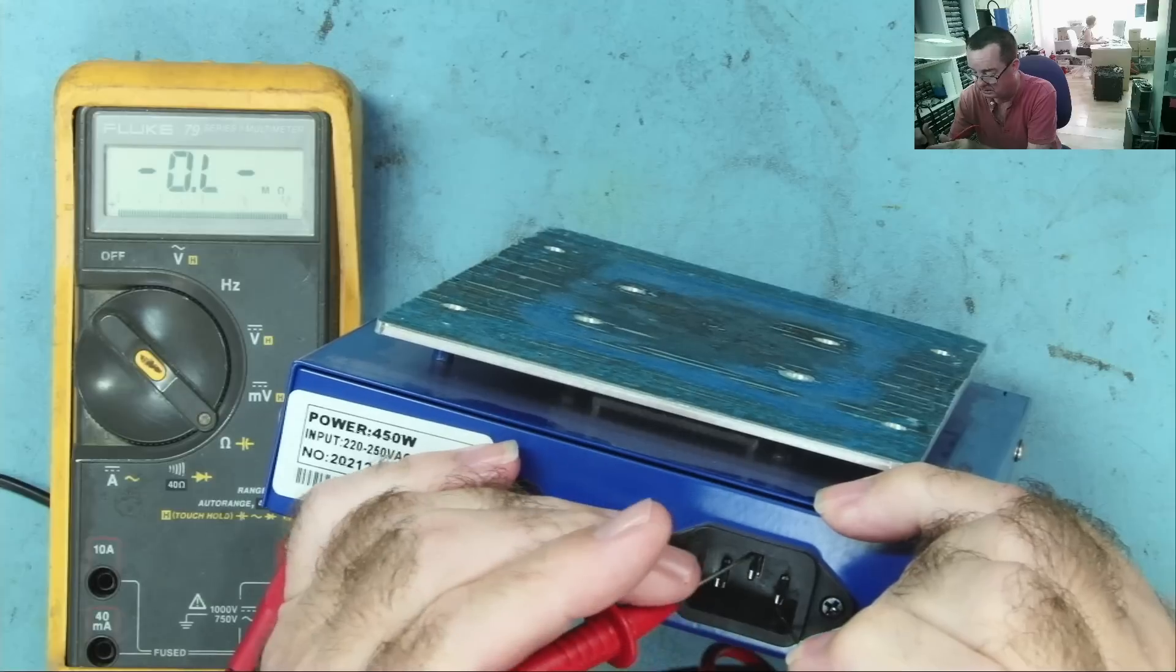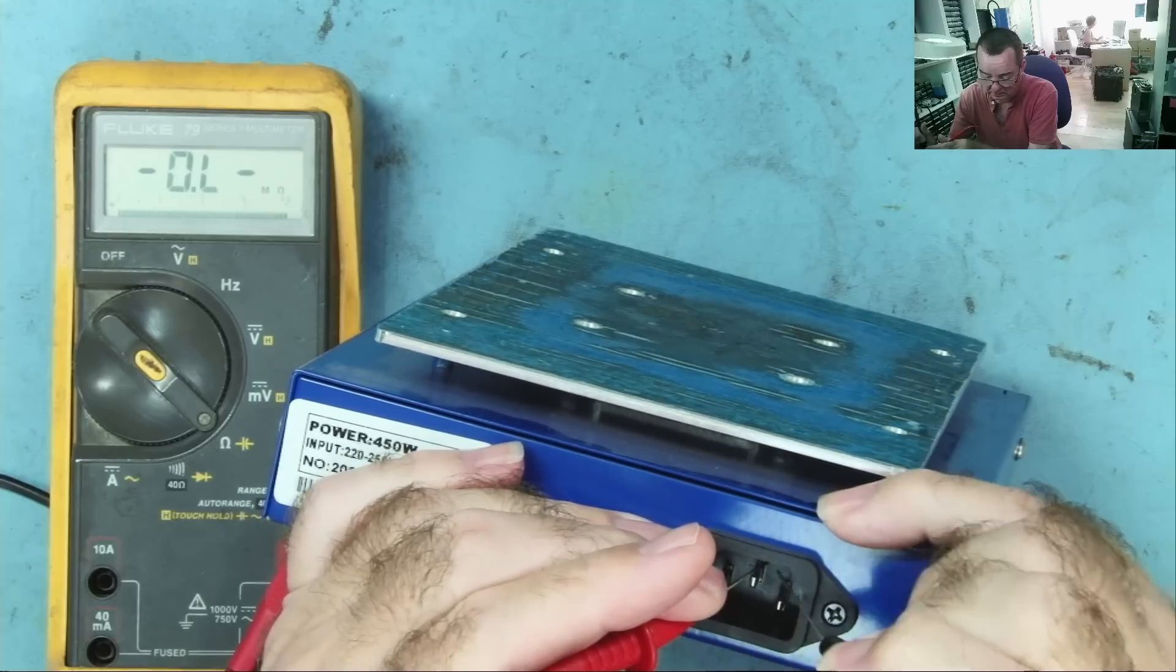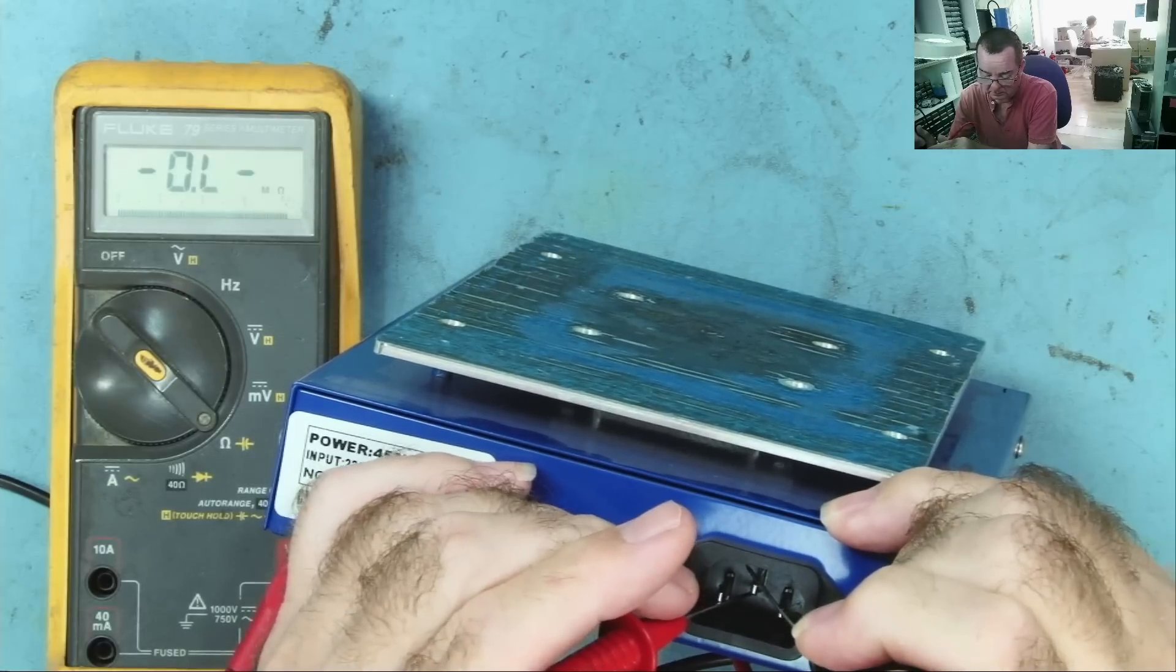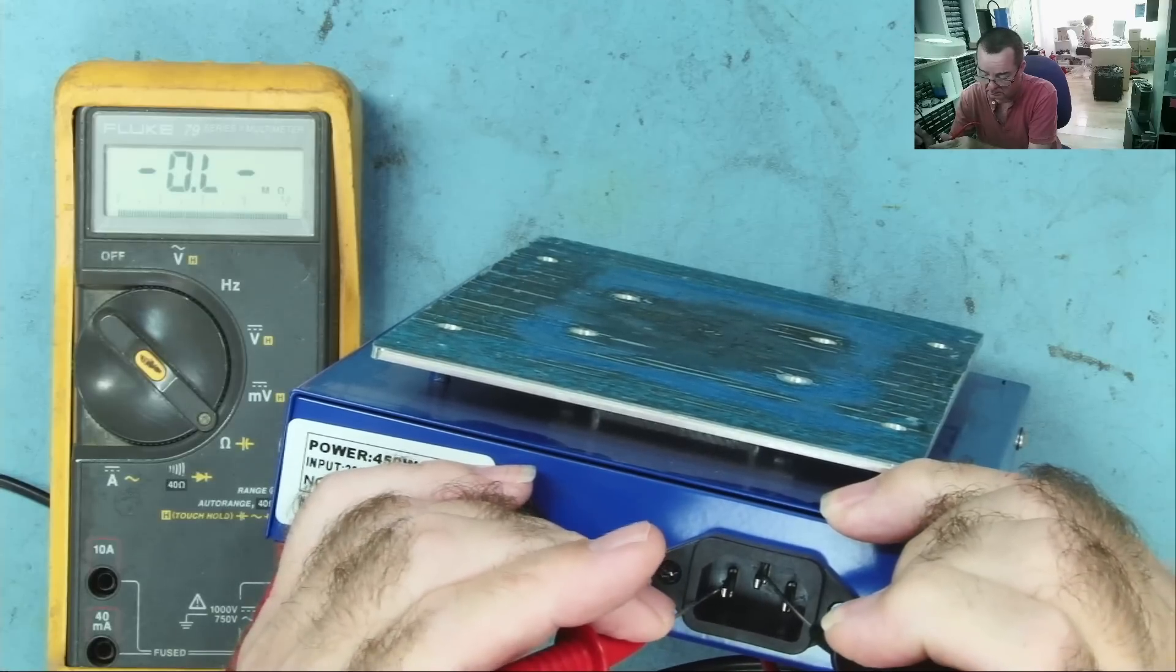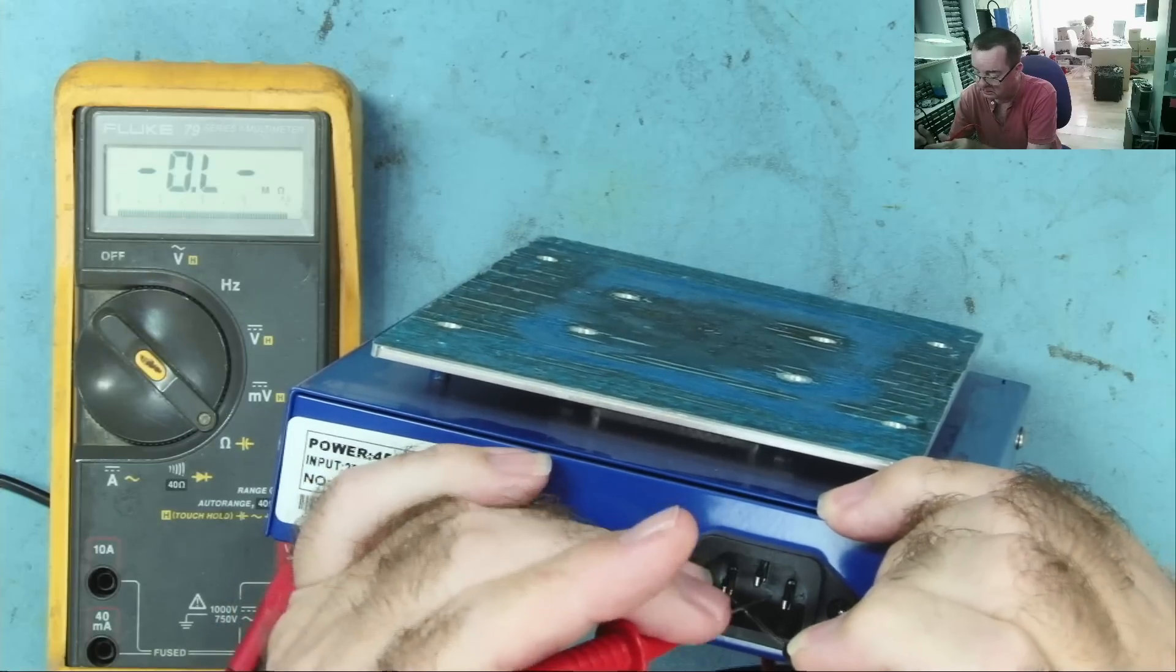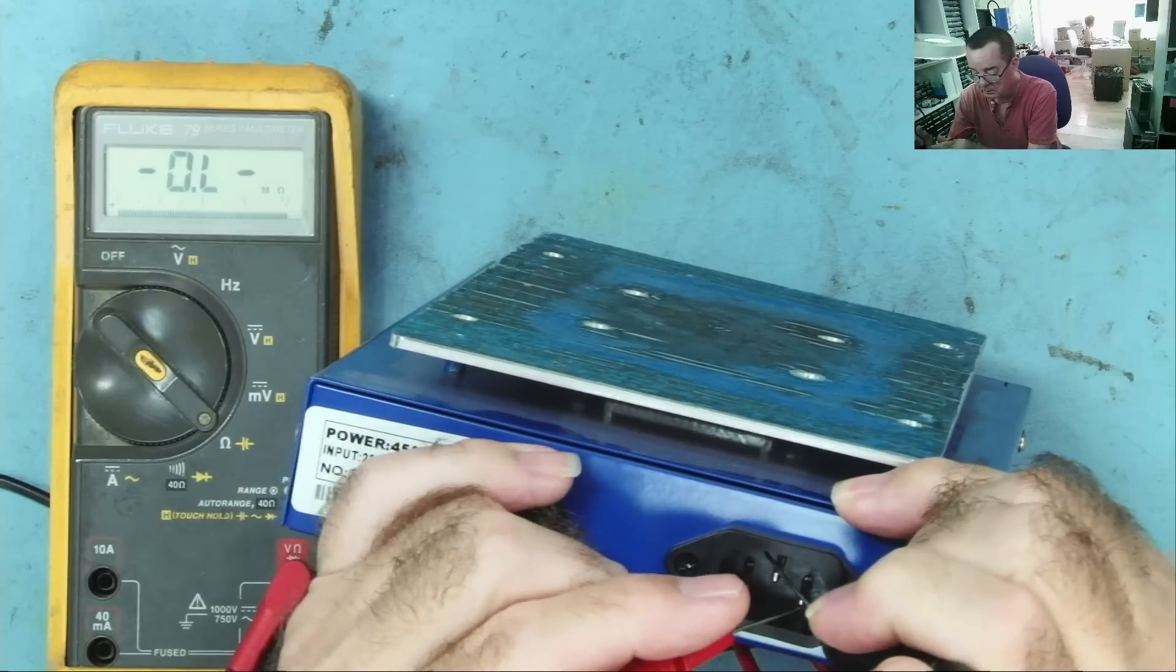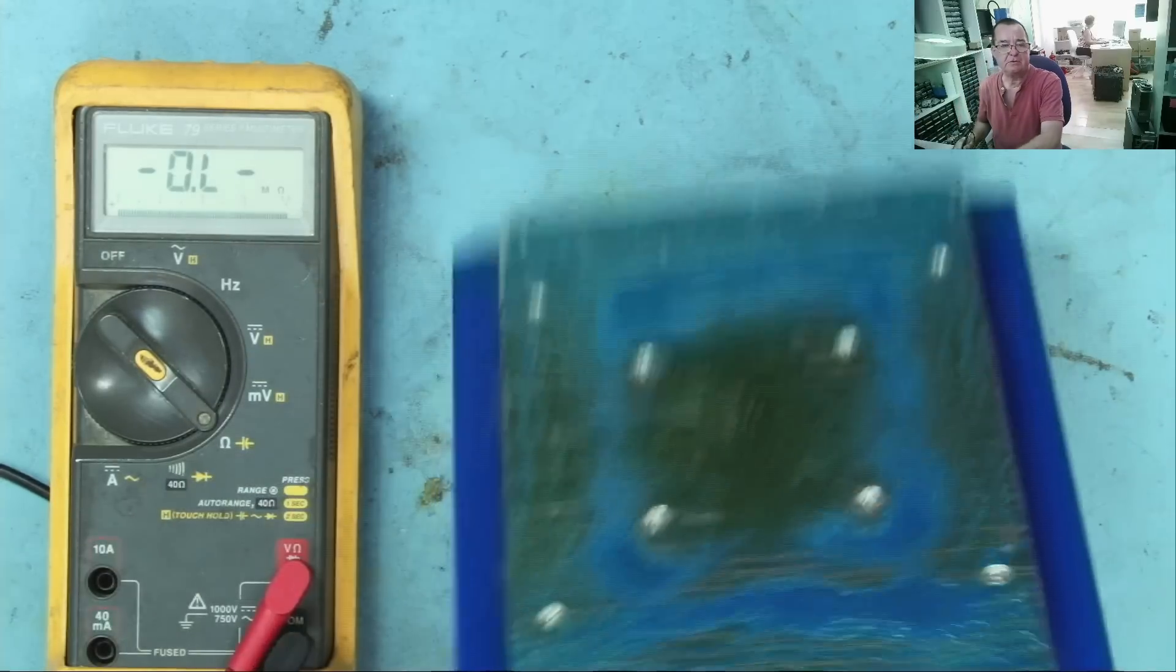That's reading 10 meg to ground. That's really quite high. And this one is reading open. In fact, the 10 mega is not reading at all now. I'll just go the other way. No. Okay. So I don't really see anything. Let's have a look inside this.